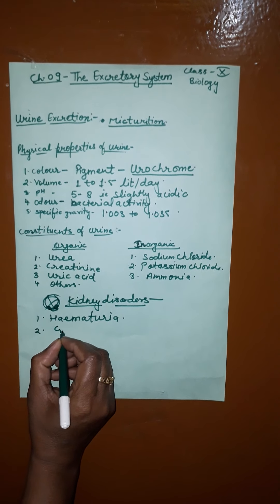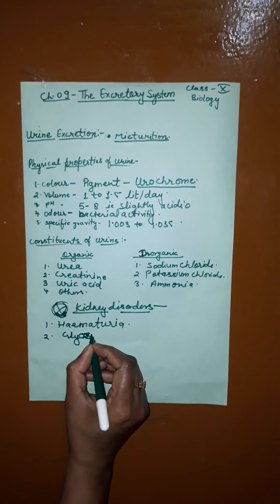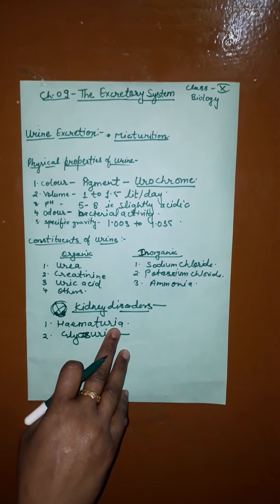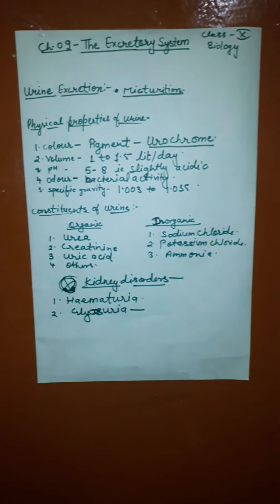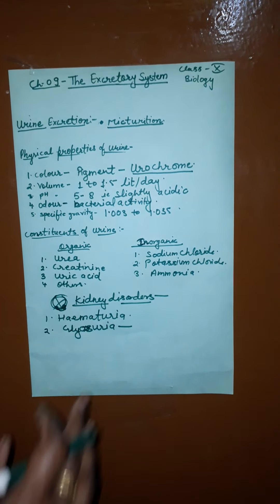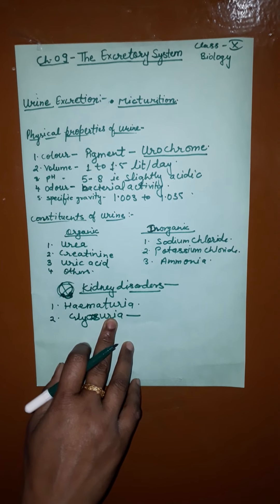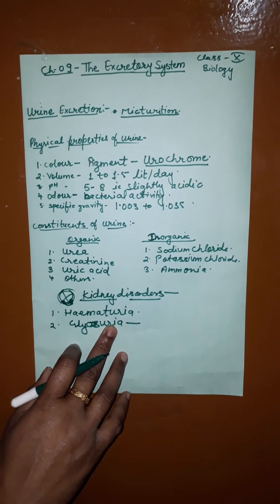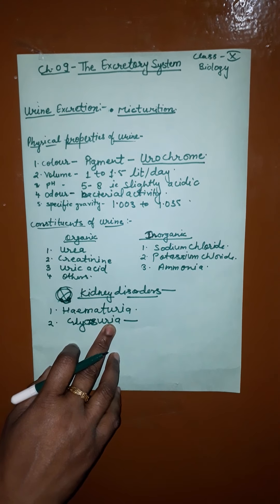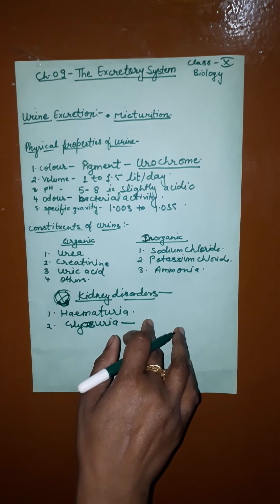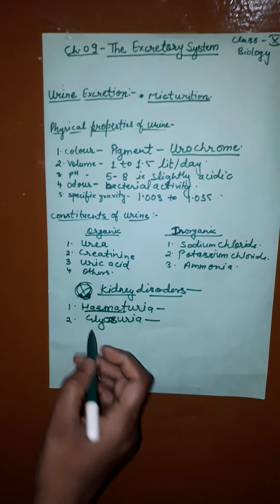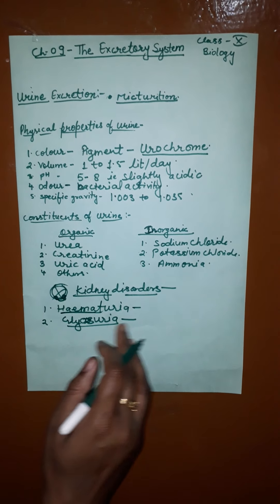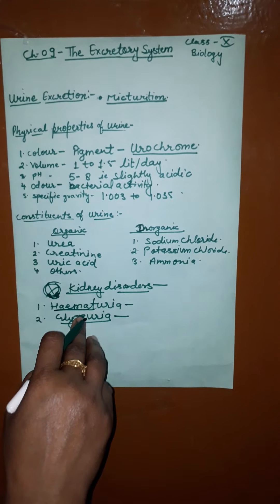The second disorder is glycosuria, in which glucose is passed out with urine due to diabetes mellitus. Diabetes mellitus involves lack of the hormone insulin in the blood. When glucose is passed out through urine, that condition is called glycosuria.